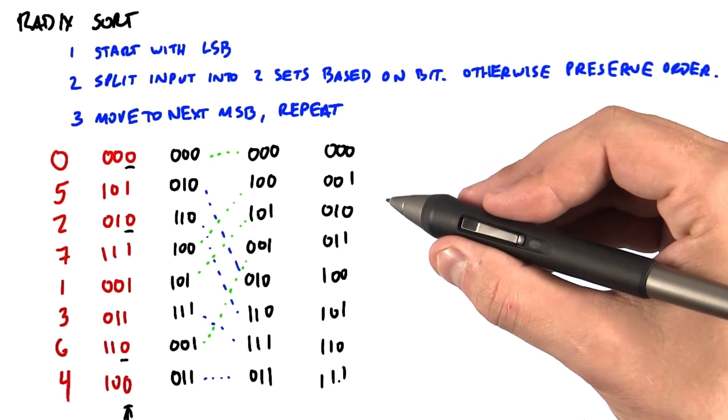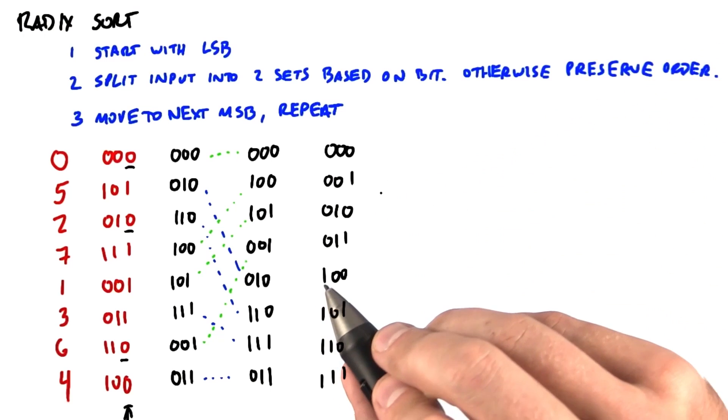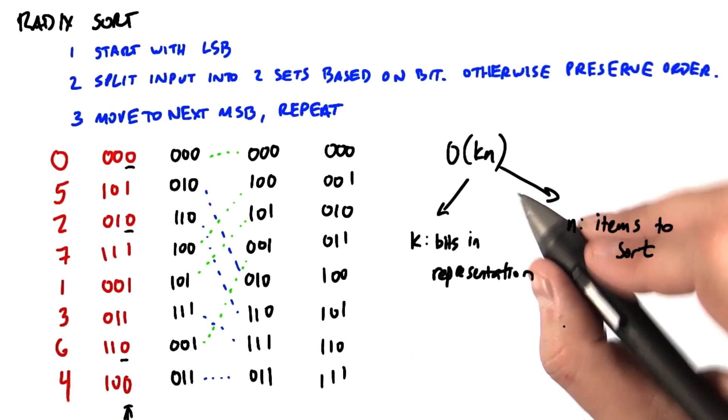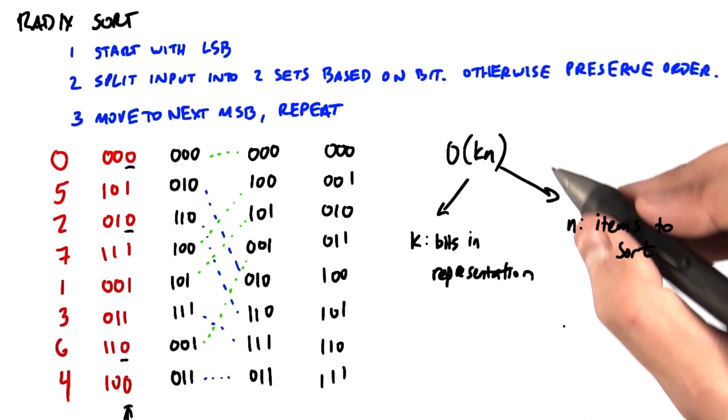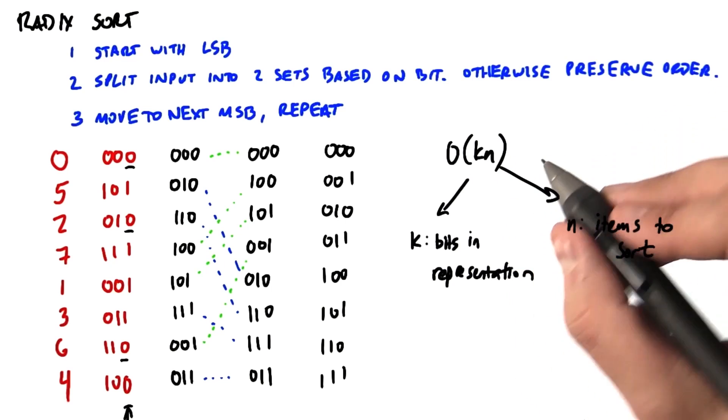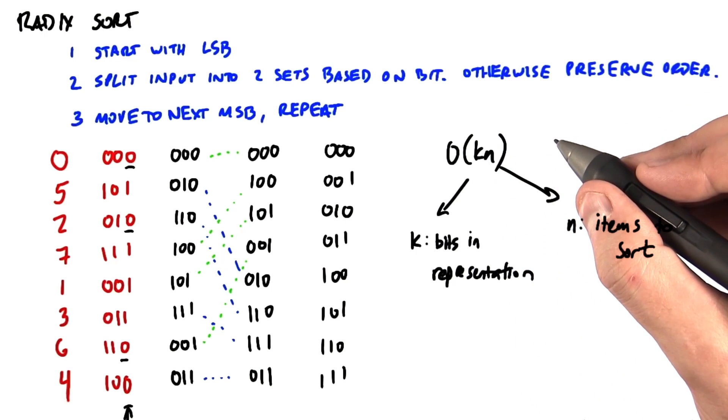Now there's two big reasons this code runs great on GPUs. The first is its work complexity. The best comparison-based sorts are O(n log n). This algorithm, on the other hand, is O(kn),